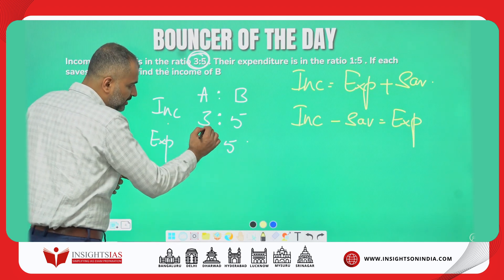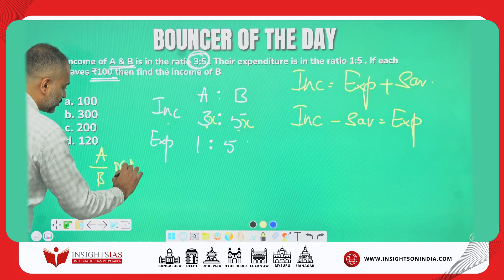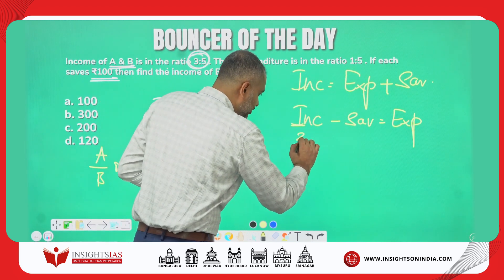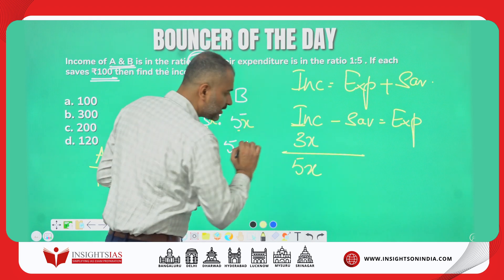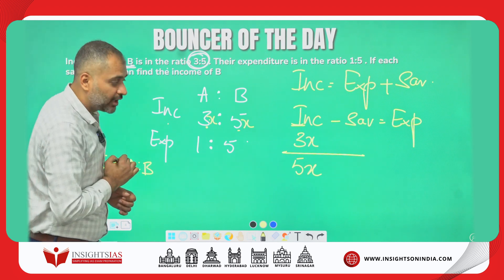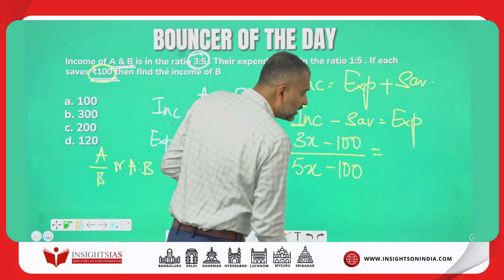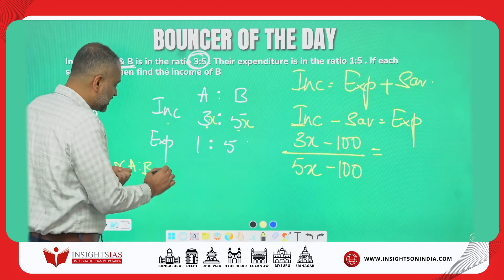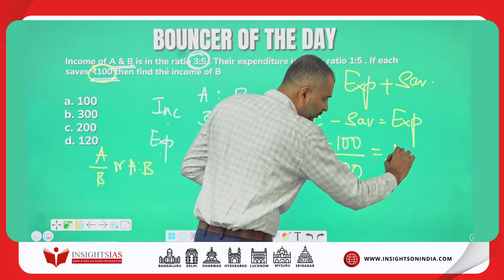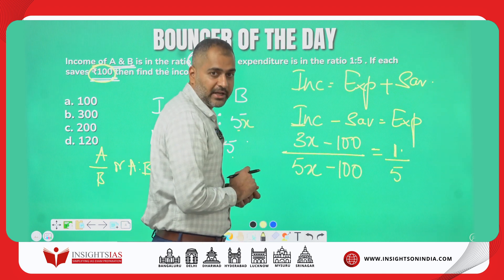The ratio of income of A and B is 3:5, so I consider these as 3x and 5x. Income is in the ratio 3x and 5x. If I subtract the savings of ₹100 from each, I get the expenditure, which is in the ratio 1:5. I write it as y and 5y — whatever variable you use, it gets cancelled out.